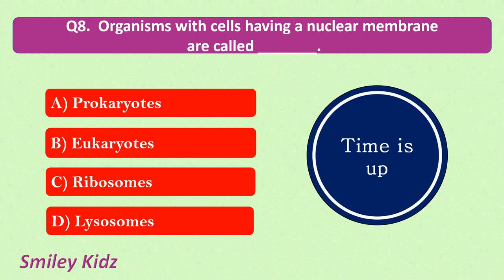Your time is up and the correct answer is eukaryotes. Organisms with cells having a nuclear membrane are called eukaryotes.